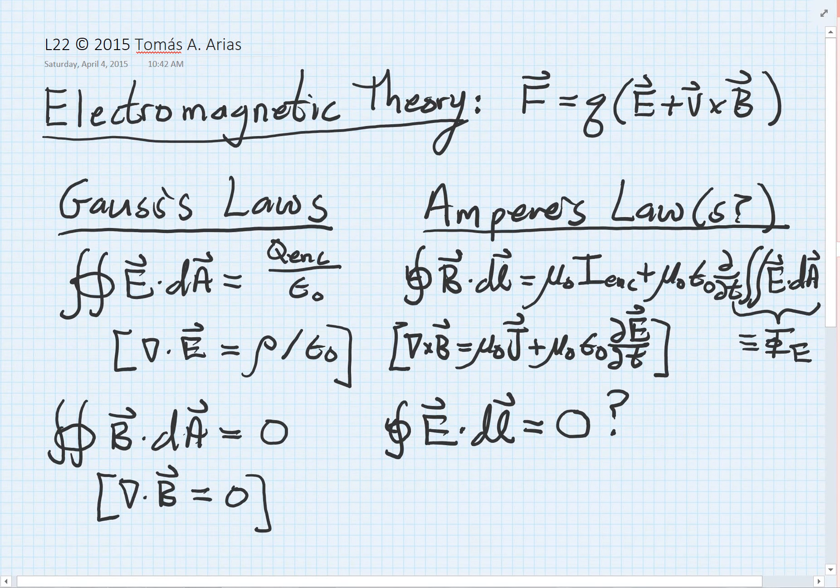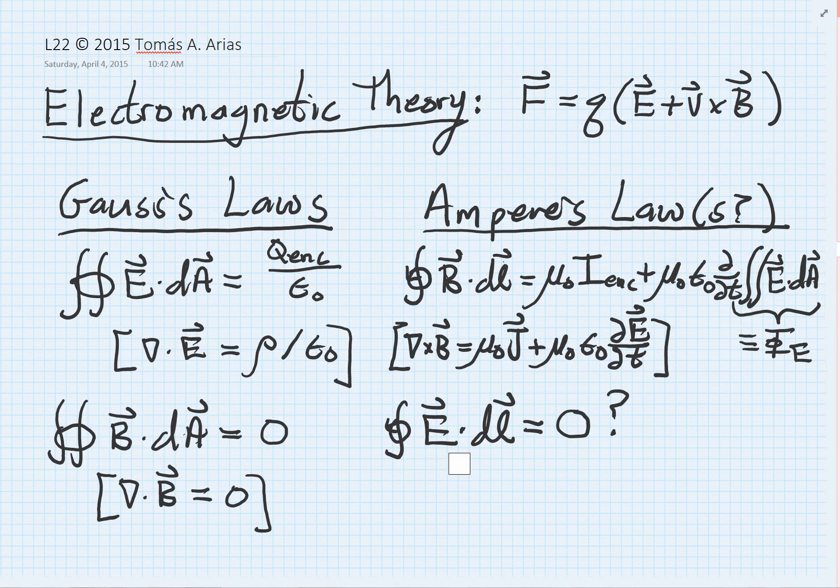It's useful now for us to take a step back and look at all that we've learned so far about electric and magnetic fields. We're coming quite close now to having the full theory of electromagnetism, as we've been developing these close analogous developments for magnetic fields to what we had seen previously for electric fields. So let's just take a step back and see where we are now.